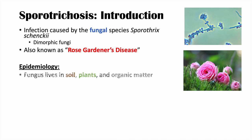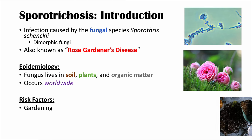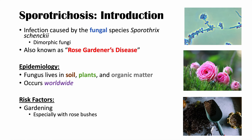The epidemiology of sporotrichosis: this fungus lives in the soil, on plants, and on other organic matter. One of the plants being roses, and some organic matter includes things like hay and moss, and it occurs worldwide. Risk factors include gardening — specifically with rose bushes — and landscaping, due to contact with soil, plants, and other organic matter. Being immunocompromised is also a risk factor, as it increases your risk for infections in general, including sporotrichosis.